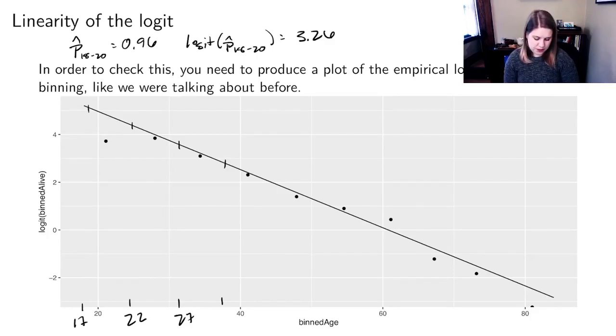So I made 10 bins here, but if I had done 5 or 20 or 22, I might have gotten a slightly different plot. And then of course it's a judgment call, so you have to look at the plot and decide if you think that it looks linear.